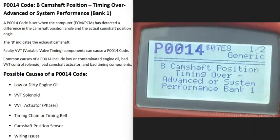Today I'm talking about a P0014 code — what it is and how you go about fixing it. A P0014 code is a B camshaft position timing over-advanced or system performance, bank one.